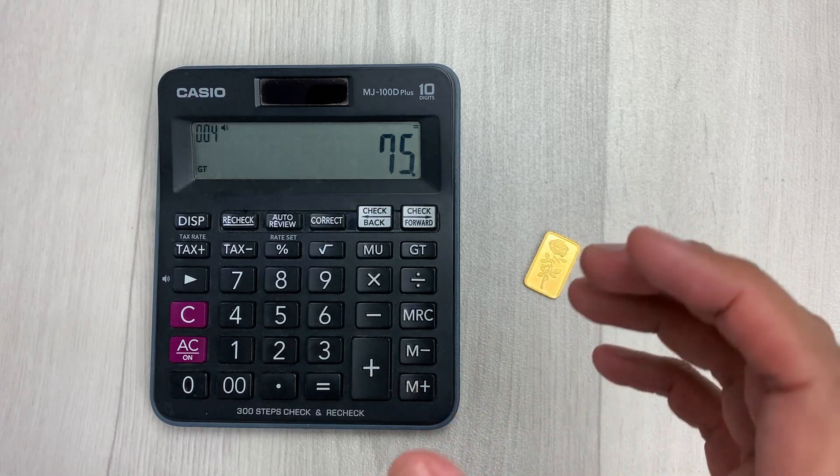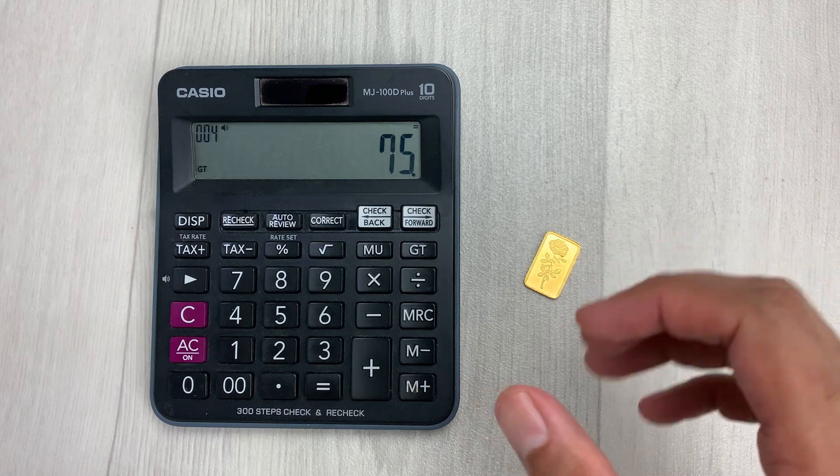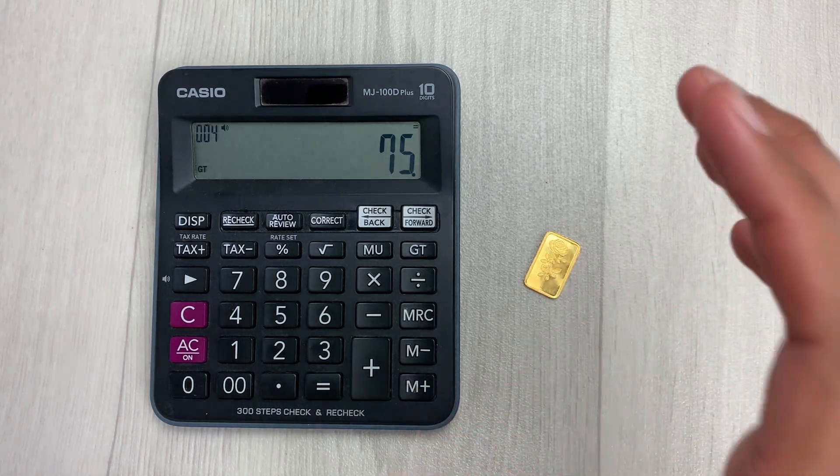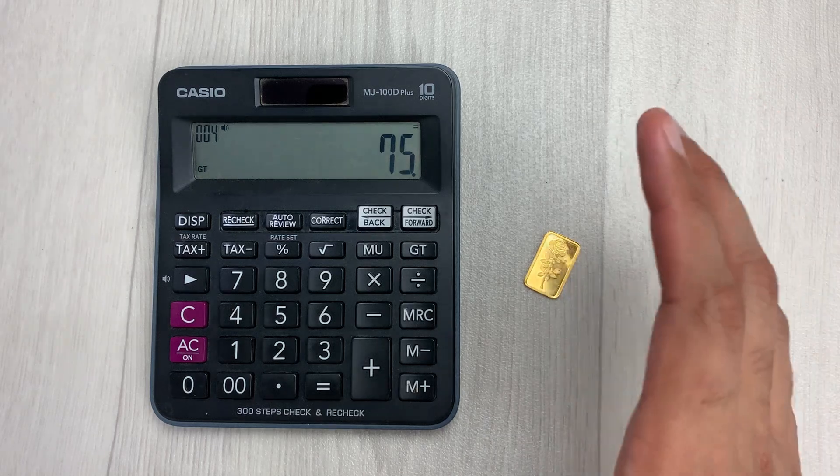We always have to divide it by 24 because 24 karat gold is pure gold.